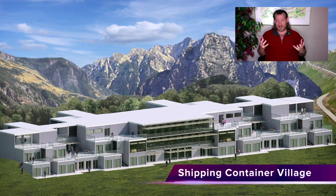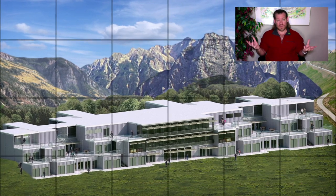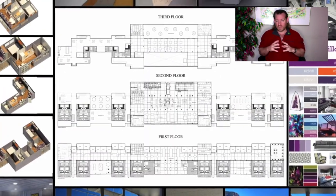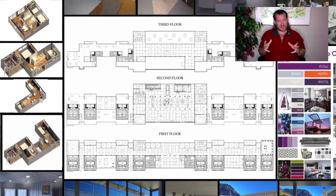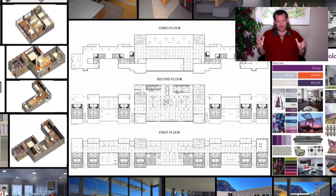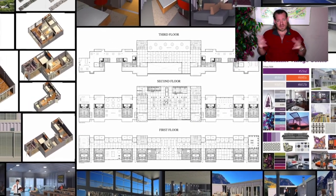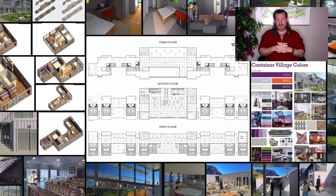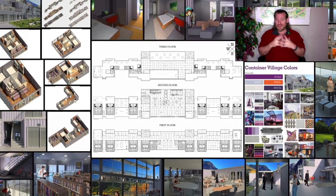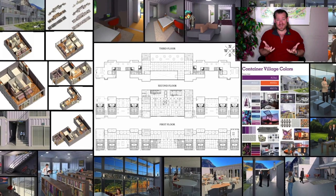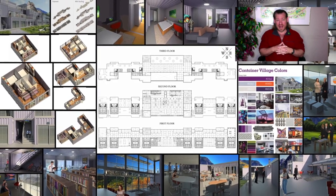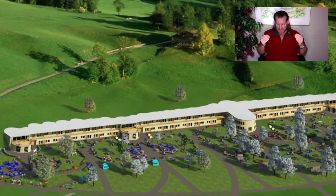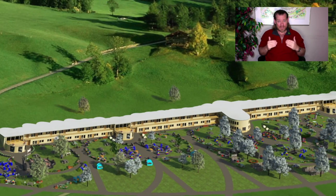Community ecology that includes our global community starts with small communities around the world, working with their local communities, working with their national communities, and then working with the global community in cooperation and collaboration to move our planet to the one we know is possible. We have the resources and the technology right now to create a world that works for everybody. It is physically possible.